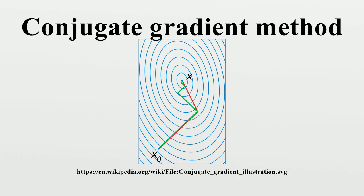Conjugate gradient method versus the locally optimal steepest descent method: In both the original and the preconditioned conjugate gradient methods one only needs to set beta_k = 0 in order to make them locally optimal, using the line search steepest descent methods. With this substitution, vectors p are always the same as vectors z, so there is no need to store vectors p.